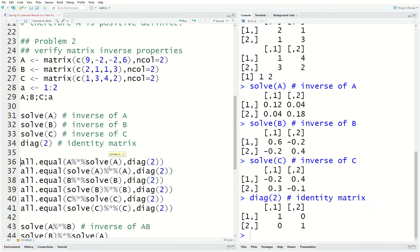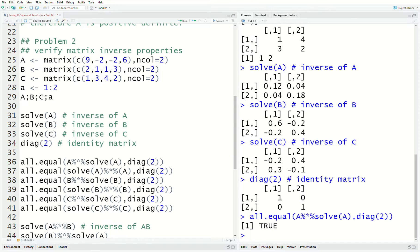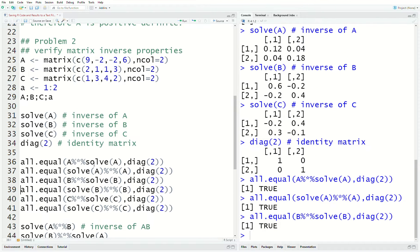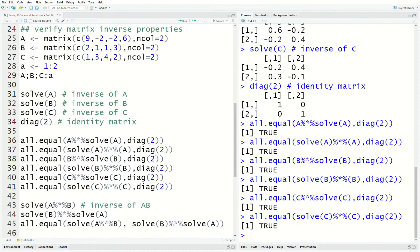So, is A, A inverse equal to the identity matrix? And the answer is yes. Then we look to see if A inverse A is the identity matrix. And it is. We do that for all matrices.